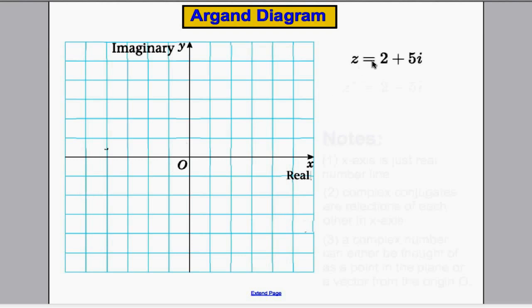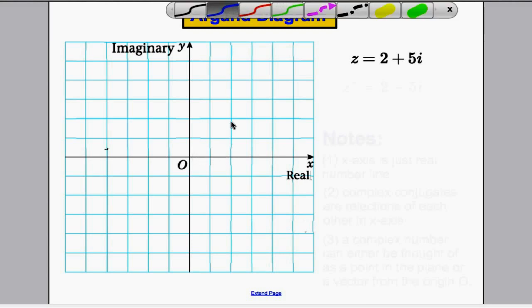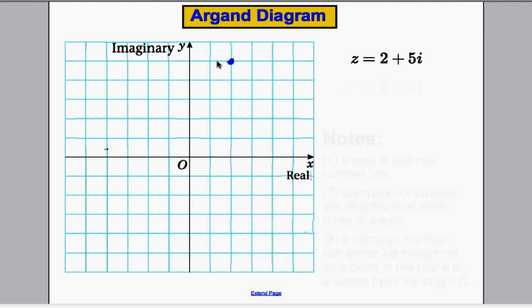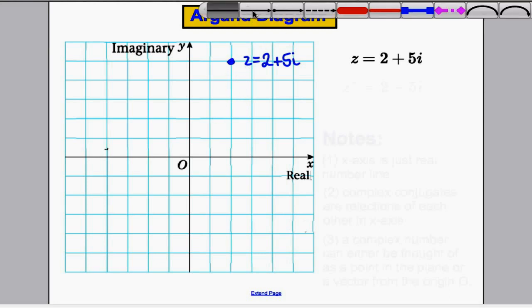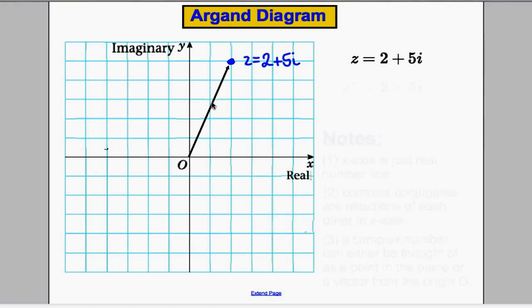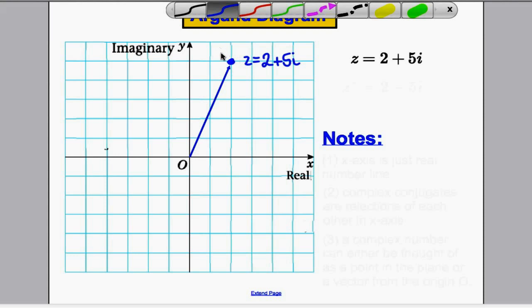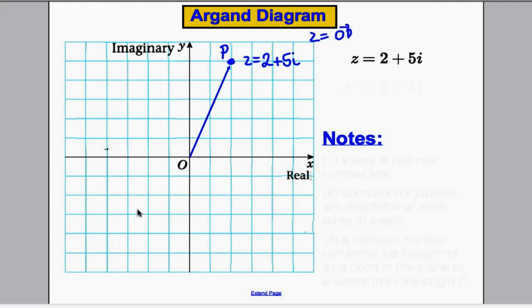For example, if we want to draw the complex number 2 plus 5i, that's telling us that we're 2 across on the real numbers and 5 up in the imaginary plane. So this here would be our z, and that would be 2 plus 5i. That's how we can draw any complex number on an Argand diagram. A complex number can either be thought of as a point in the Argand diagram, or it can also be thought of as a vector from the origin to that point — so z can be thought of as the vector that goes from O to P, as well as a point in the Argand diagram.